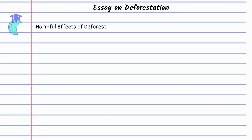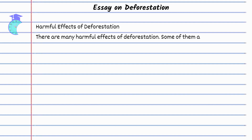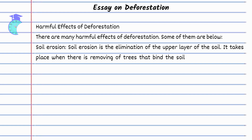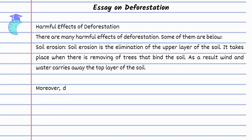Harmful Effects of Deforestation. There are many harmful effects of deforestation. Soil erosion is the elimination of the upper layer of the soil. It takes place when trees that bind the soil are removed, and as a result, wind and water carry away the top layer of the soil.